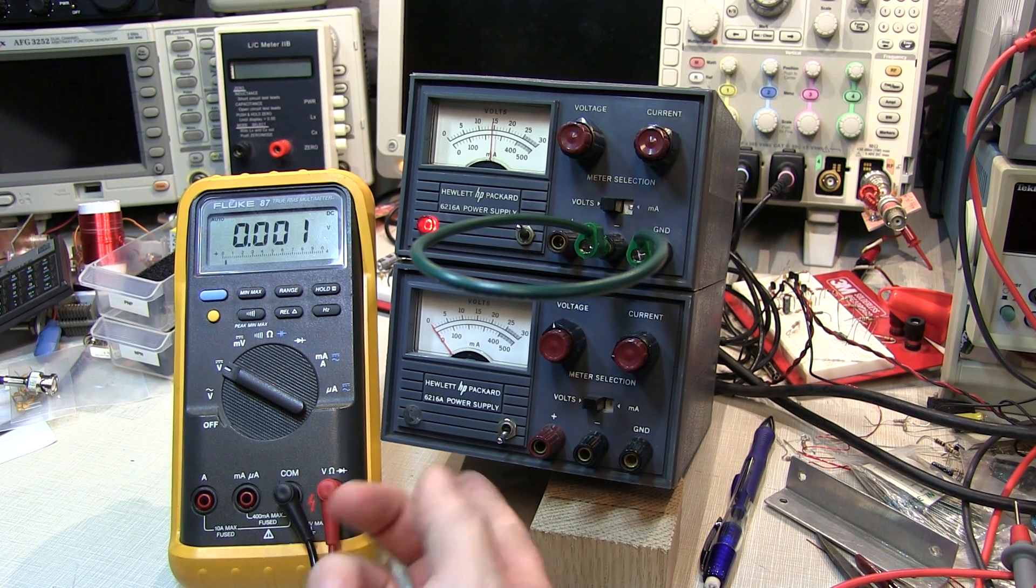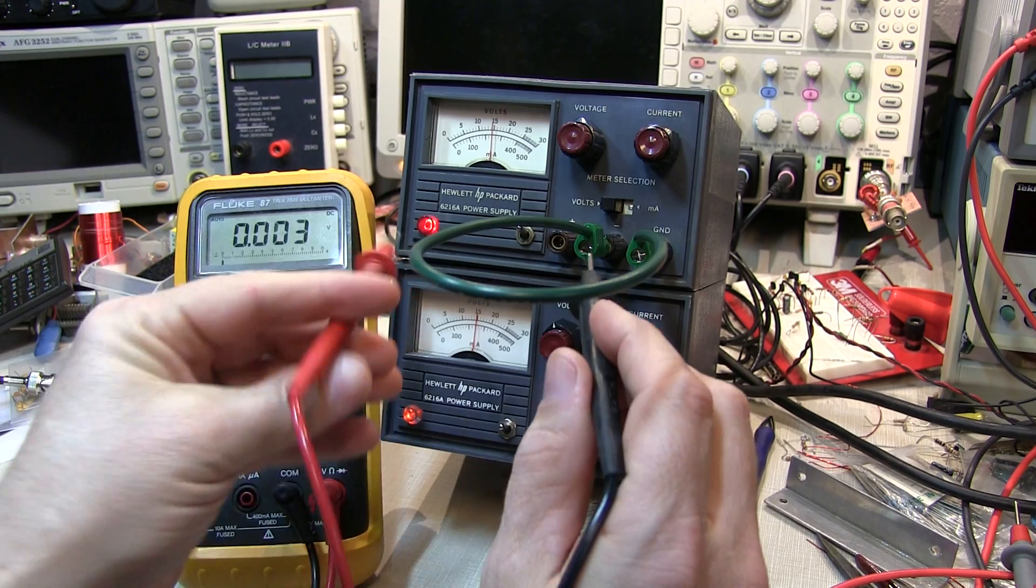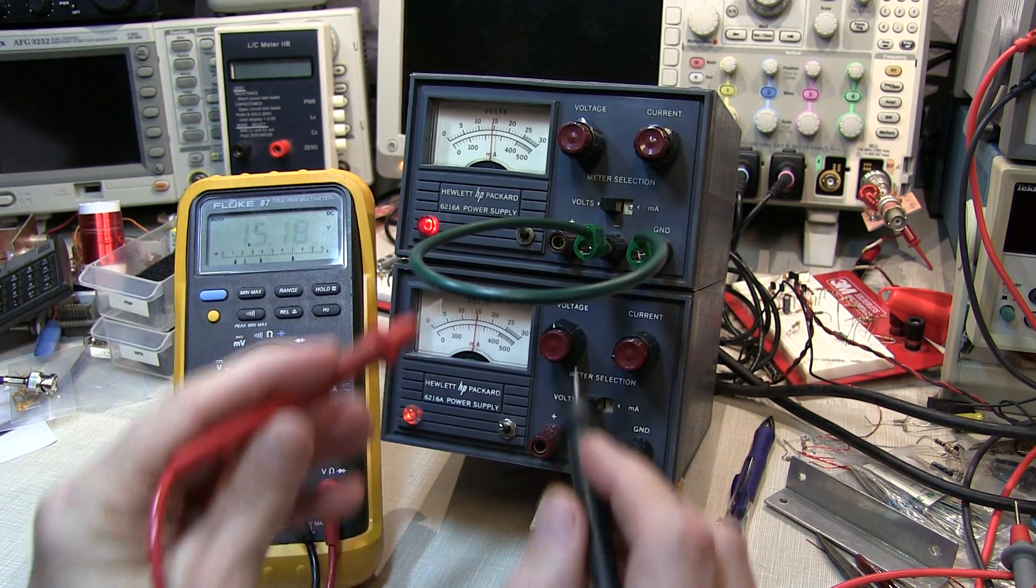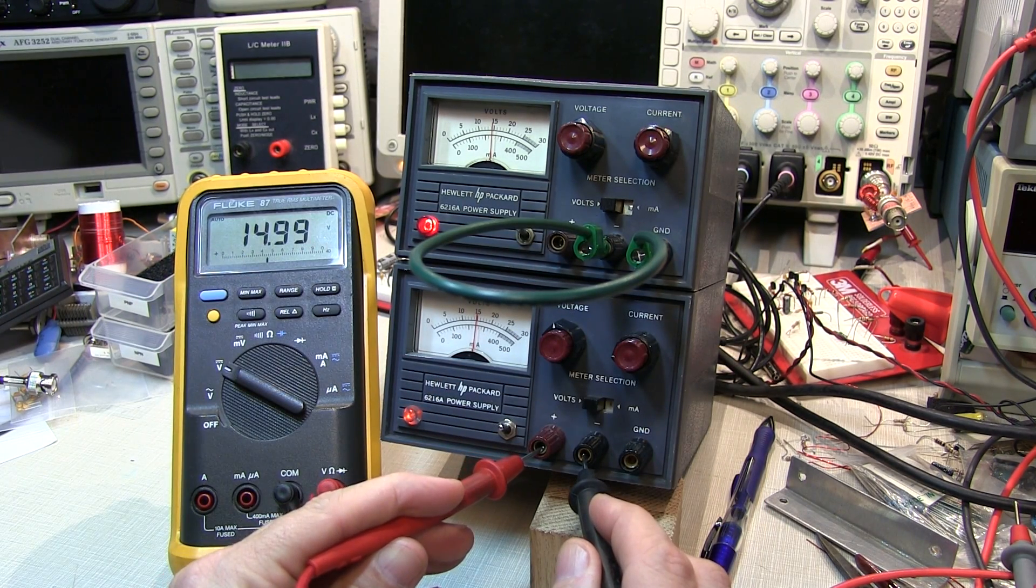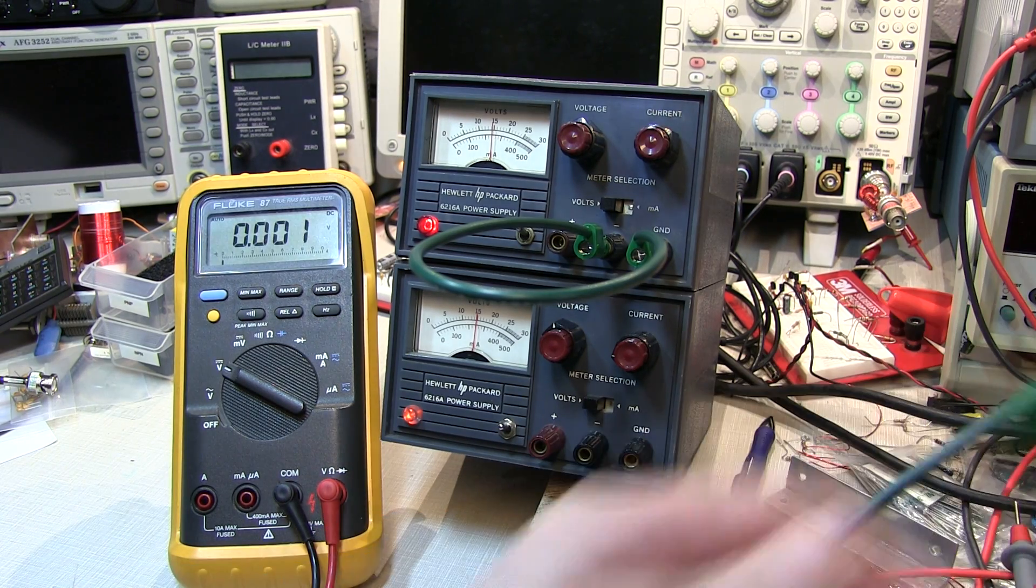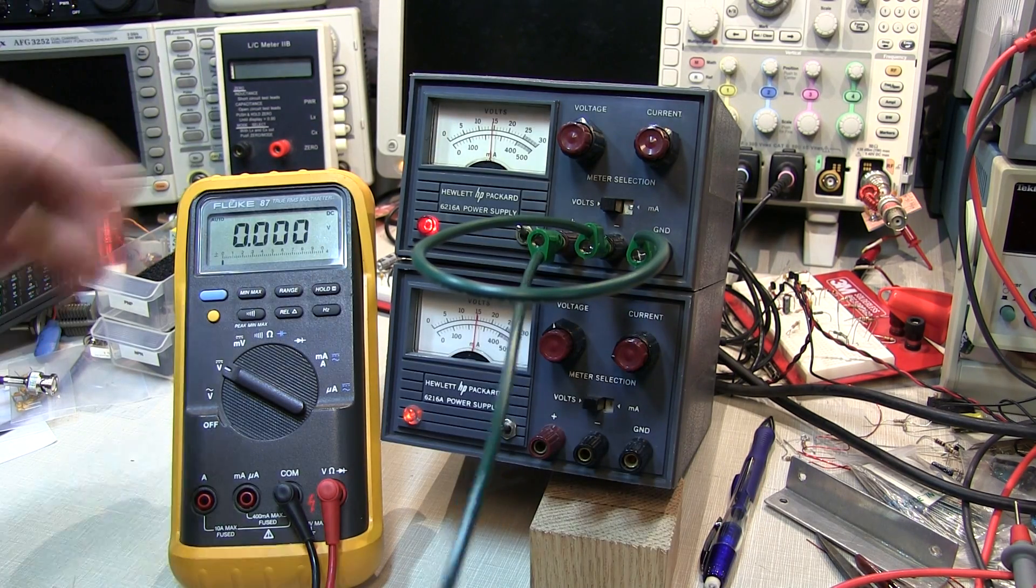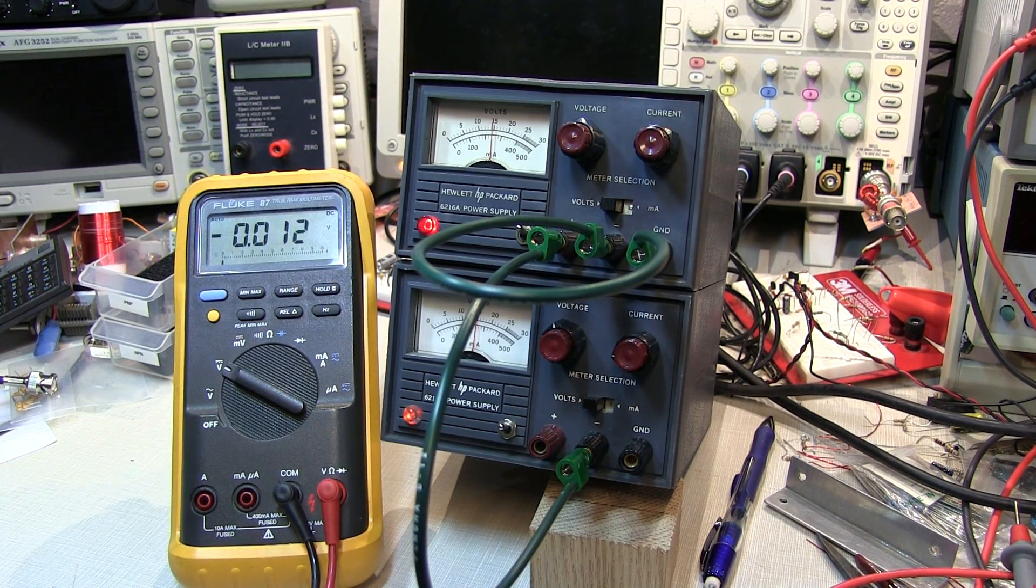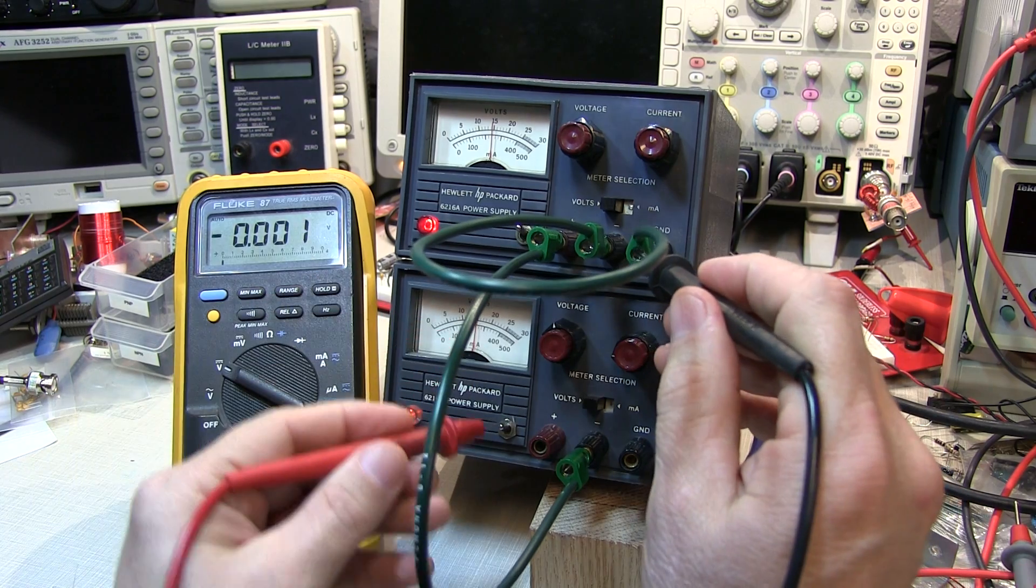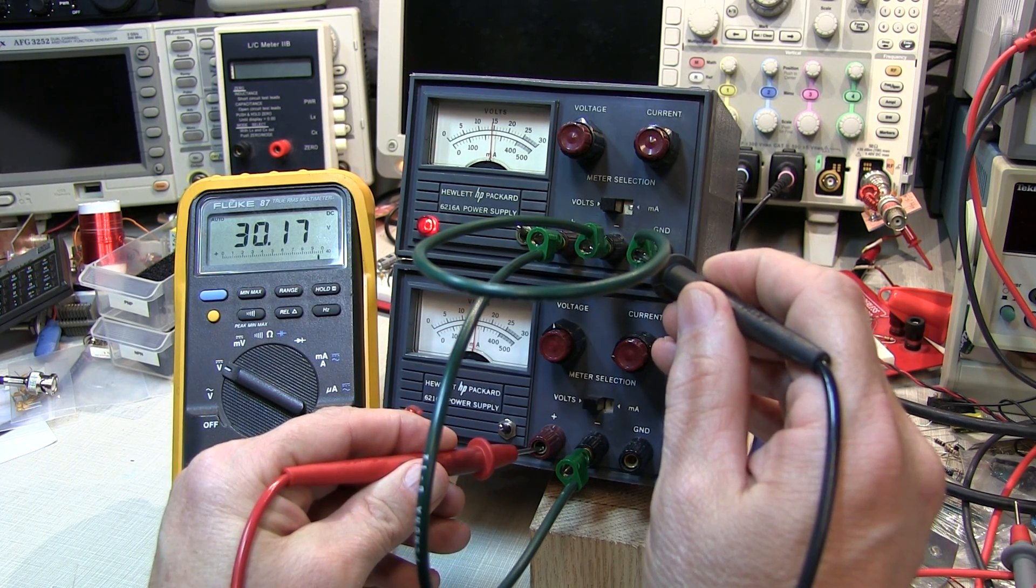For example, I've got both these power supplies adjusted to about 15 volts. Let's get the terminals here right. So there's 15 volts on that power supply. There's 15 volts on this power supply here. If I take a jumper and I connect from the positive of this top power supply to the negative on the lower power supply, now with respect to ground, the output of the lower power supply is 30 volts.